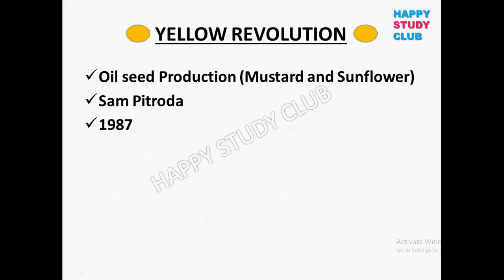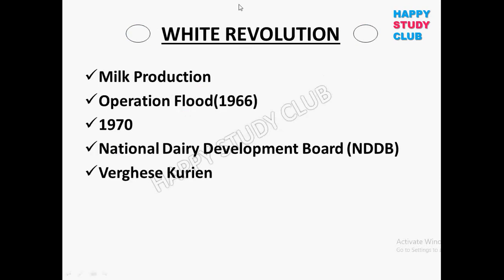Next is the Yellow Revolution. The Yellow Revolution was introduced for oilseed production in India, specifically for mustard and sunflower oil. The father of the Yellow Revolution is Sam Pitroda, and it was introduced in 1987.